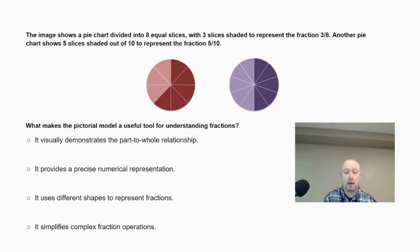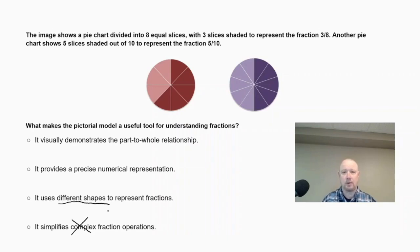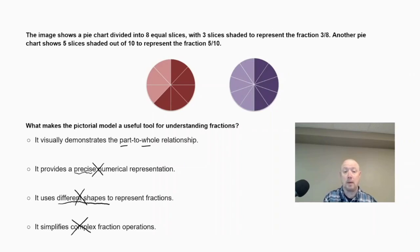First, I'll eliminate the last choice — simplifying complex fraction operations like multiplication, division, addition, and subtraction — because the pie chart won't help us with that. Different shapes: we're not using different types of shapes to represent fractions here; the pie chart is consistently a circle with slices. Precise numerical representation: while it does show numbers, precision isn't the key point. What's really happening is that a pie chart illustrates a part-to-whole relationship — the whole circle and the shaded slices as parts — so the best choice is the first one.